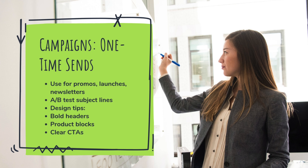Campaigns in Klaviyo are one-time email or SMS blasts — like Black Friday promos, new product launches, or monthly newsletters. To create one, go to Campaigns, click Create Campaign, and choose email or SMS. Select your audience, either a list or a segment, and build your message. Klaviyo's drag-and-drop email builder makes this easy — you can add product blocks, images, text, buttons, and timers.